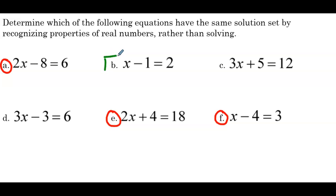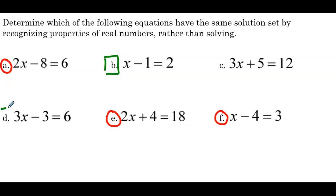Now putting a green square around B (x minus 1 equals 2): looking at equation D (3x minus 3 equals 6), the right side went from 2 to 6 — multiplied by 3. Multiplying the left side by 3 gives 3x minus 3, which matches — so B and D share a solution set. Equation C (3x plus 5 equals 12) is all by itself — none of the other equations have the same solution as 3x plus 5 equals 12.